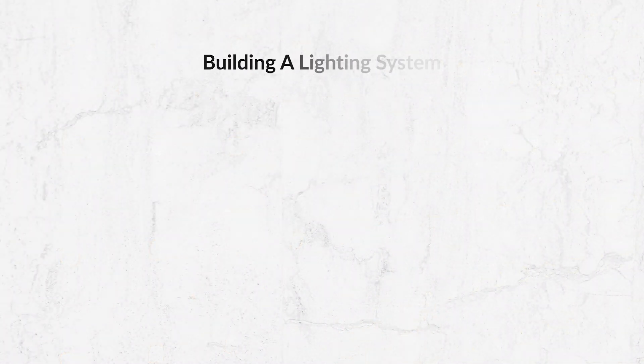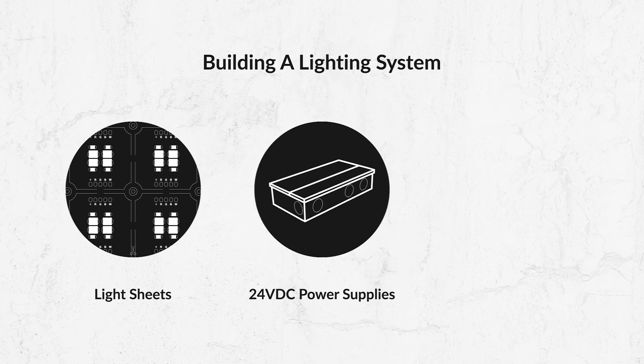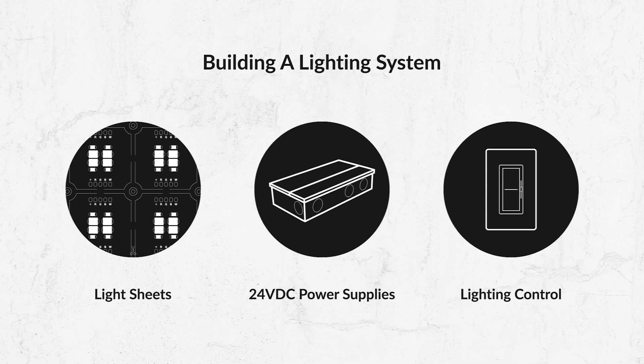Generally speaking, an origami system is comprised of lightsheets, 24 volt DC power supplies, and an appropriate lighting control.